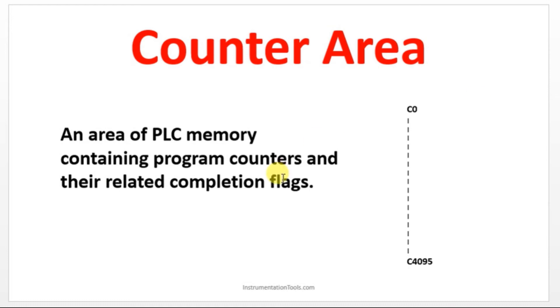We have a counter area. In Omron you can make use of 4095 counters. The addressing will be starting with C000, and one more counter if you are using, that will be C0001. It is not that you need to use the sequence in order, nothing like that. You can make use of any address in between C0 to 4095.